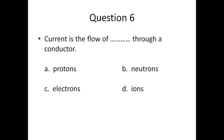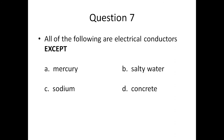Question six: current is a flow of dash through a conductor — A) protons, B) neutrons, C) electrons, or D) ions. Question seven: all of the following are electrical conductors except — A) mercury, B) salty water, C) sodium, D) concrete.